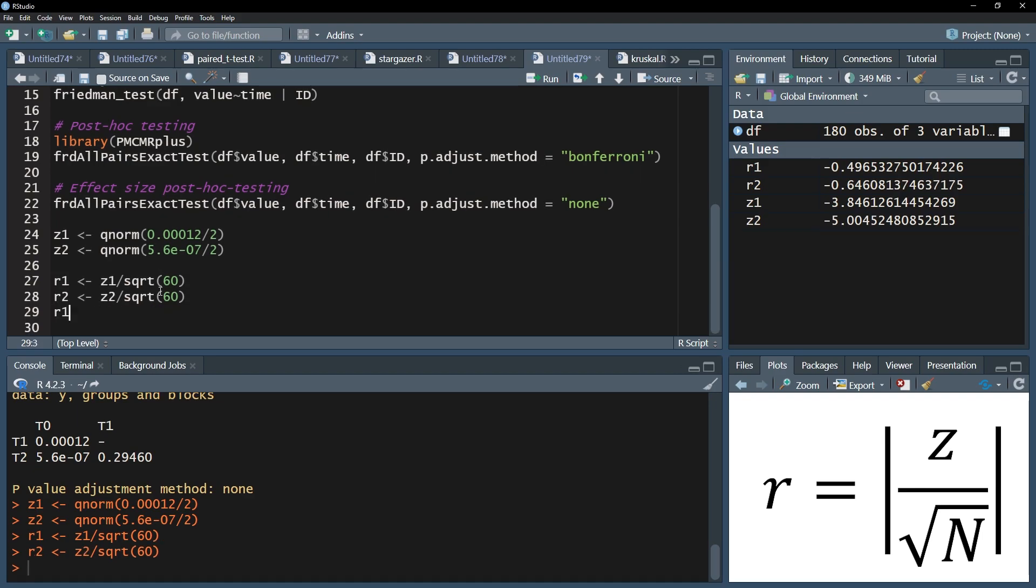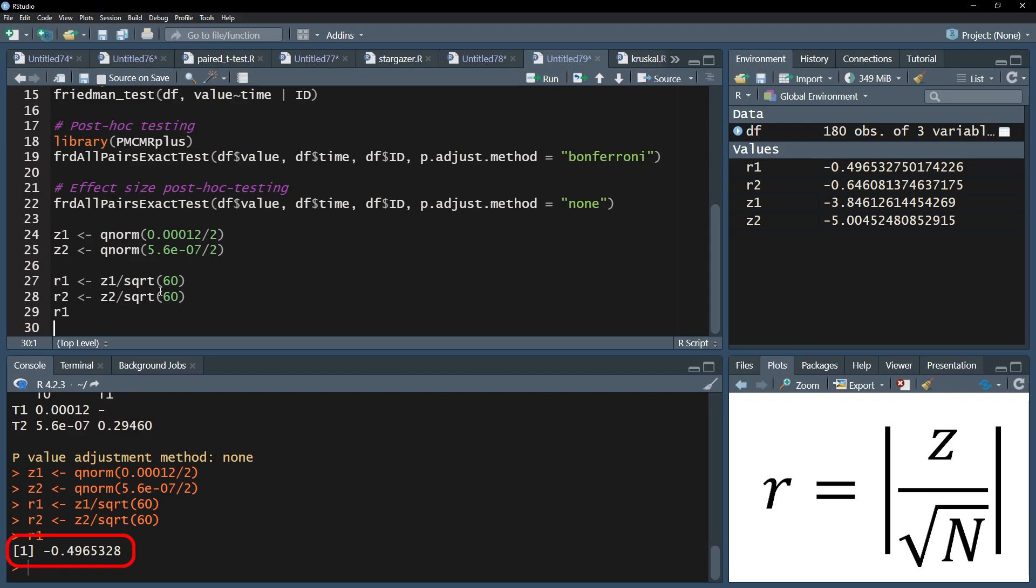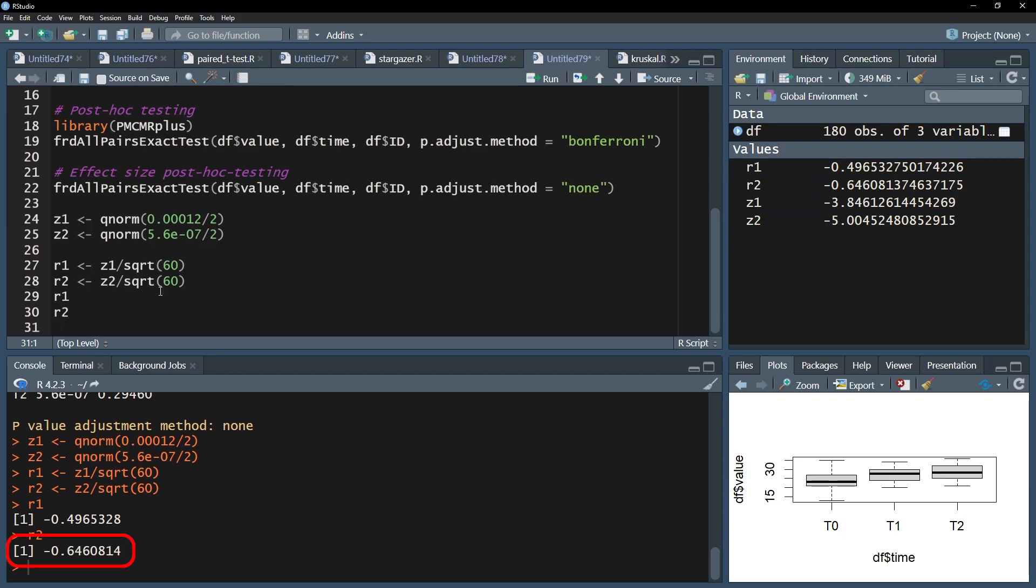For my example, I have an effect size of r equals 0.497 when comparing the differences for t0 and t1. For the difference between t0 and t2, I can observe an effect size r of 0.646.